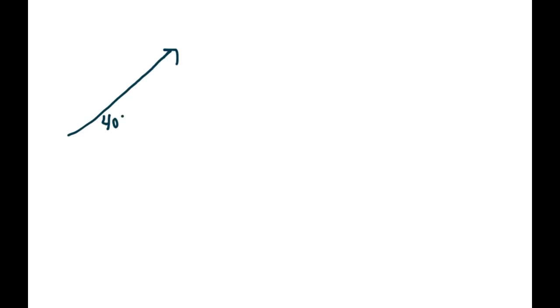Let's do one more - number 3. A ball is thrown into the air at an angle of 40 degrees to the horizontal. It's going at 25.0 meters per second at 40.0 degrees - so we have 3 sig digs. The question is what are its components? We want to find the vertical and the horizontal. Should we draw east first then north, or north then east? It really doesn't matter - it'll work the same either way.